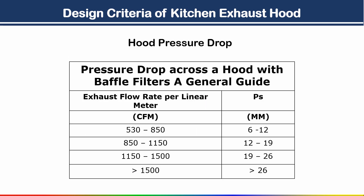Now let's see the hood pressure drop. Based on your exhaust flow rate per linear meter, you get the pressure drop. If the flow rate is between 530 to 850 cfm, the pressure drop is 6 to 12 mm. This is the pressure drop across the hood with baffle filter.